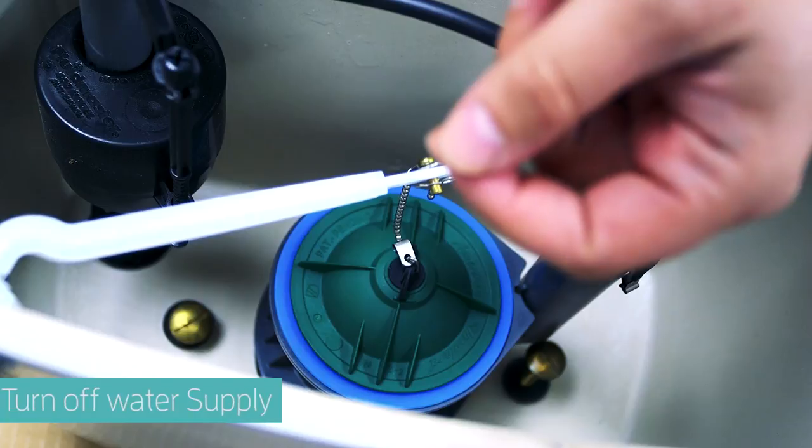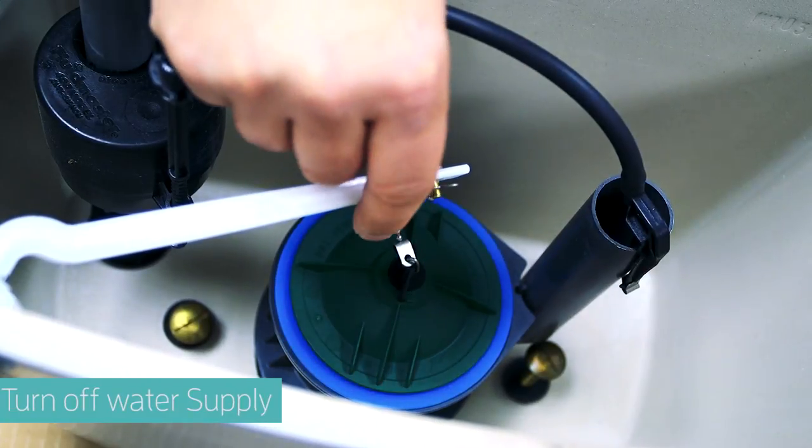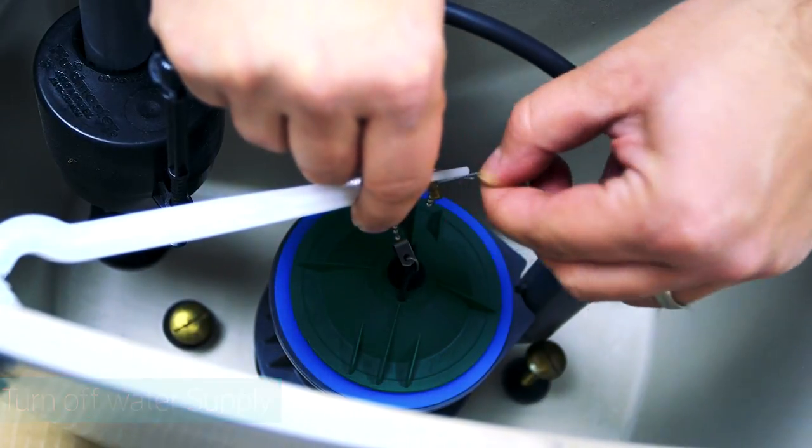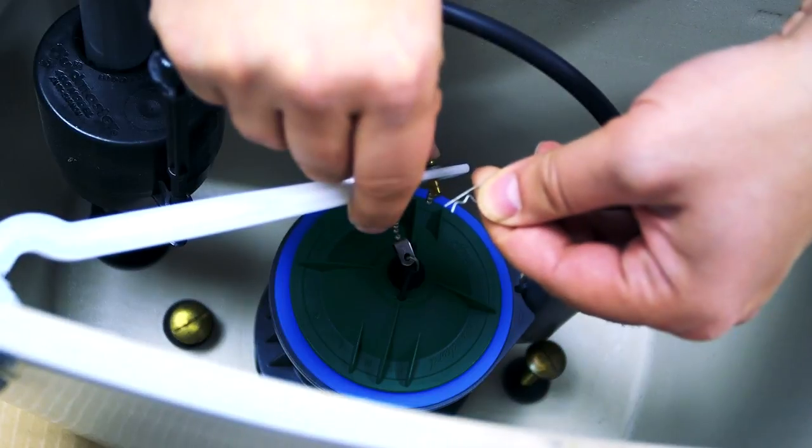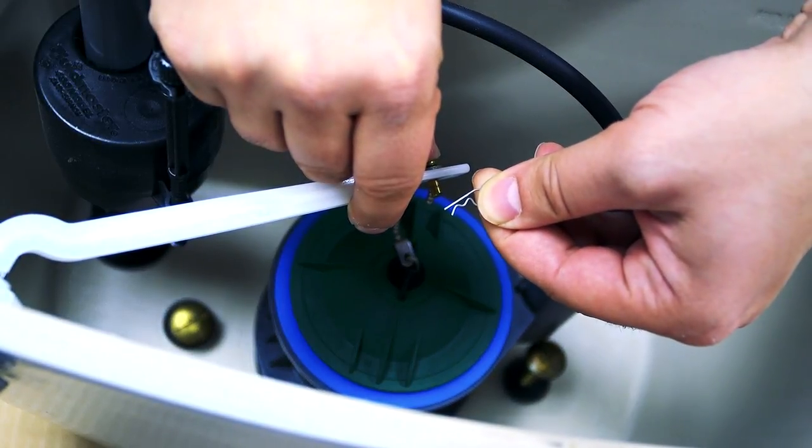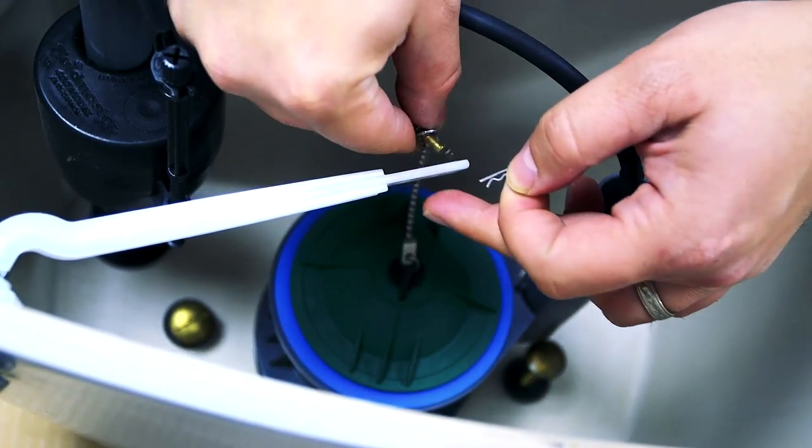In this video, we will show you how to replace the flush valve for your Champion toilet. After turning off the water supply and removing the tank from the bowl, remove the hairpin and clevis pin to release the bead chain from the trip lever.